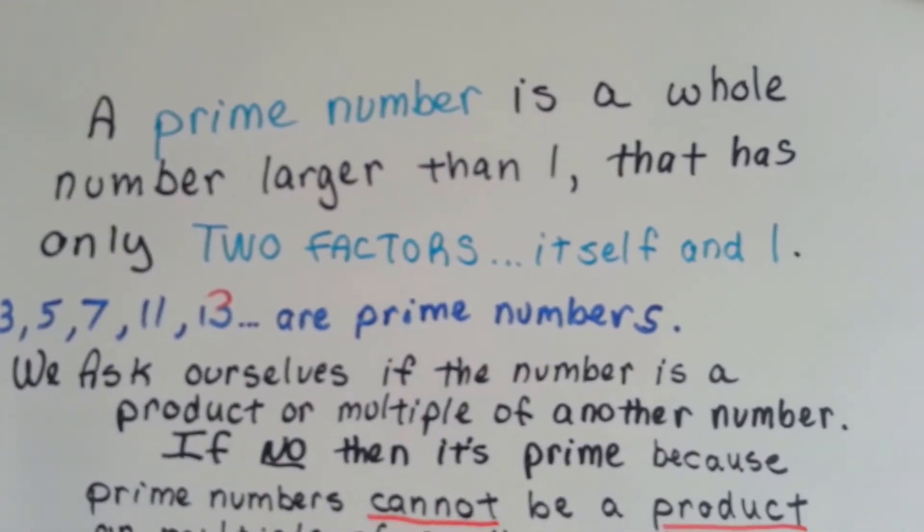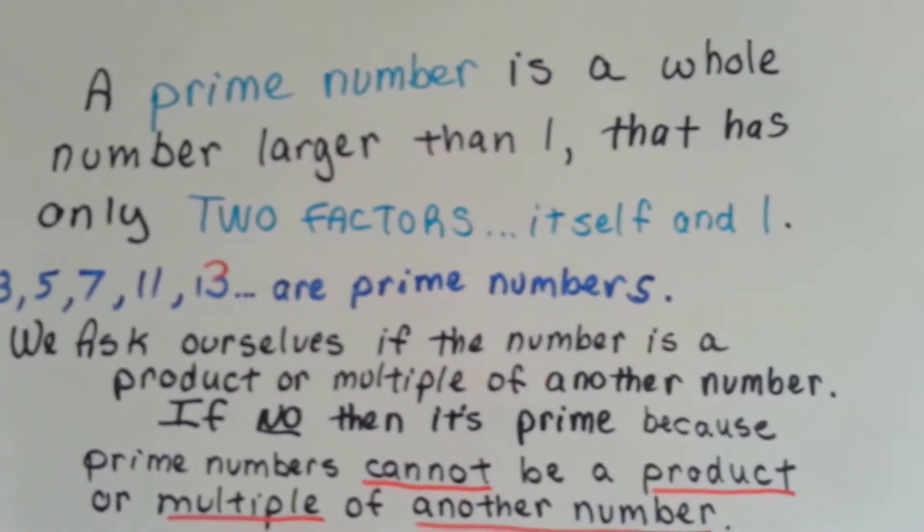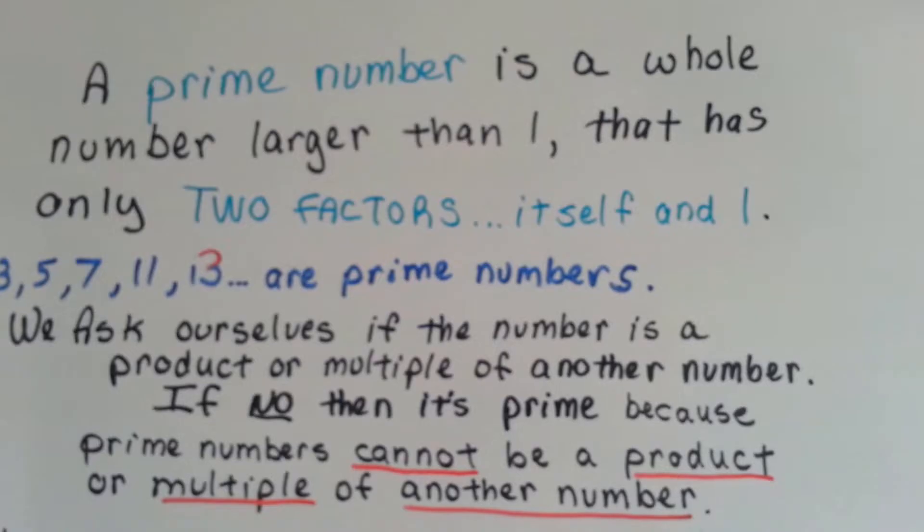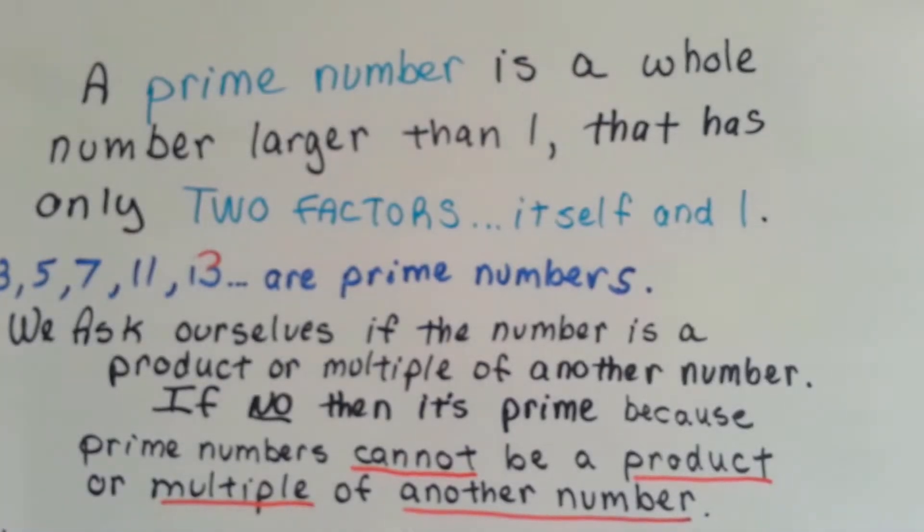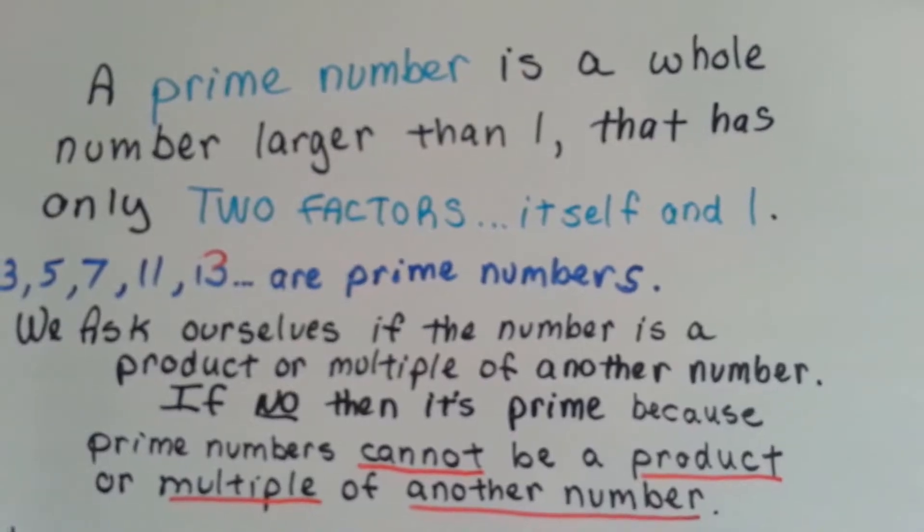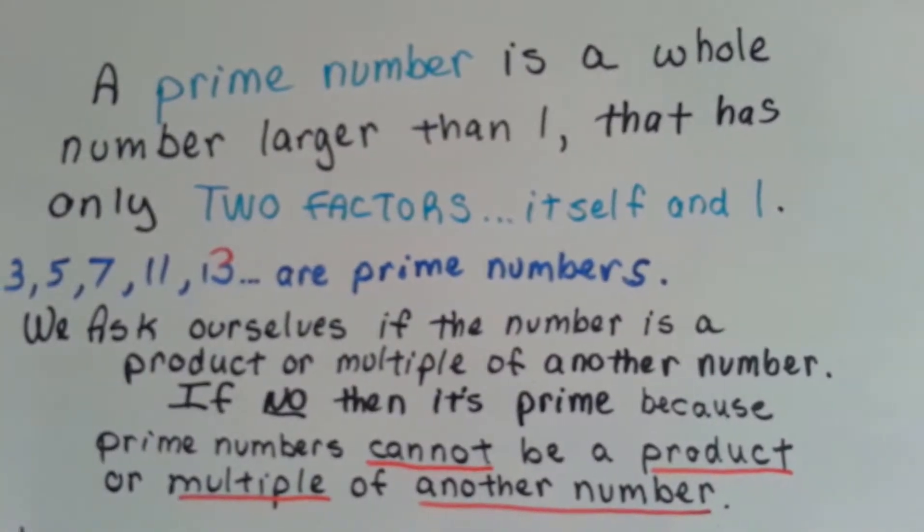They're not the answer in the times table. We ask ourselves if the number is a product or multiple of another number. Is it an answer in the times table? If it's not, then it's prime because prime numbers cannot be a product or a multiple of another number.